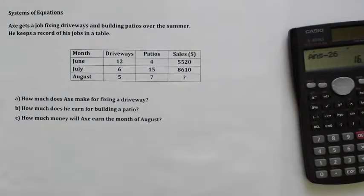Hey guys, this is Systems of Equations number three. Slightly different format in the question. Axe gets a job fixing driveways and building patios over the summer and he keeps a record of his jobs in a table.